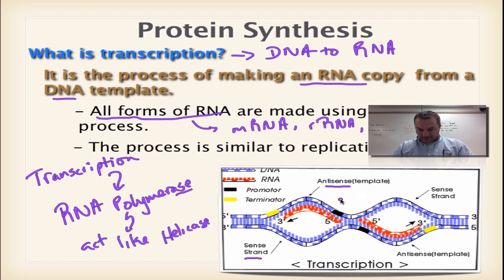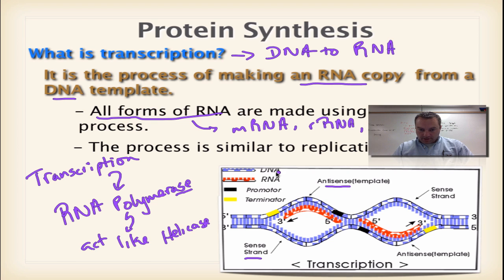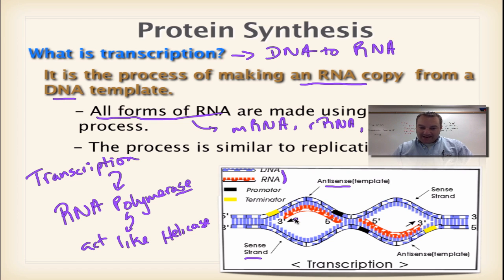Here's your DNA. RNA polymerase is going to go in a 5' to 3' direction. It unzips the DNA and makes RNA. It's only going to transcribe one side or the other. The side that gets transcribed is called the antisense strand — that's the template. We're going to make a copy of it. The side that is not being transcribed is called the sense strand.